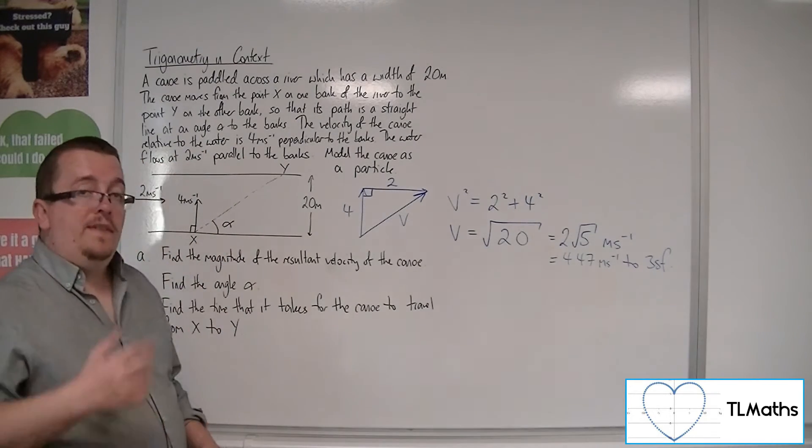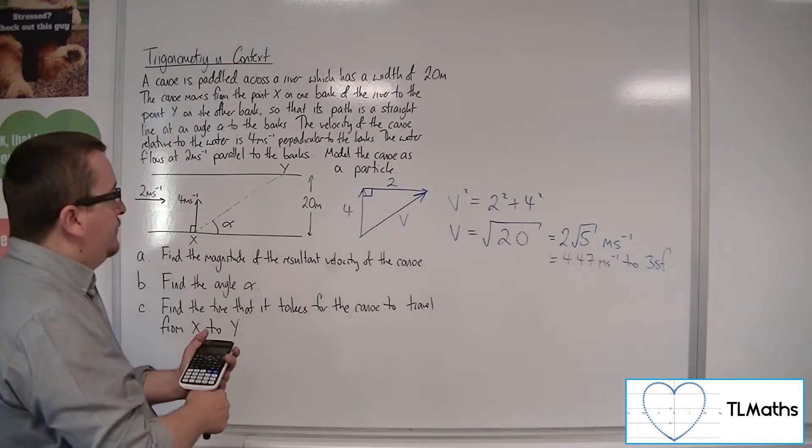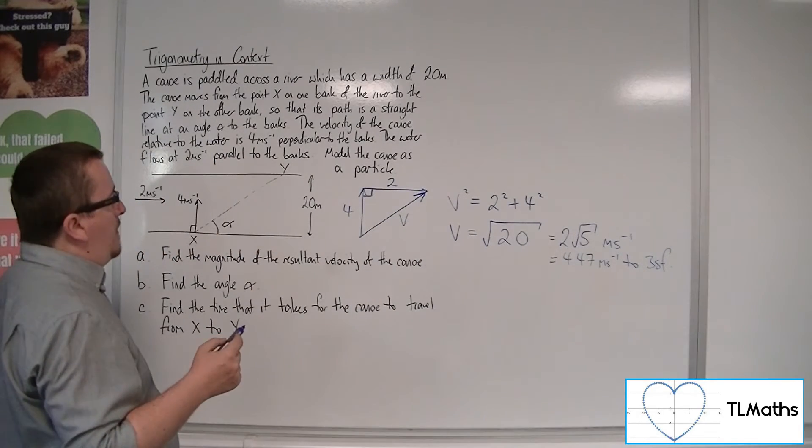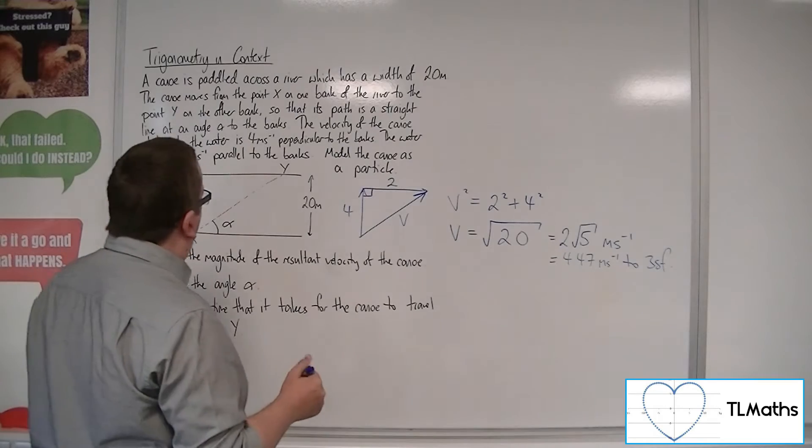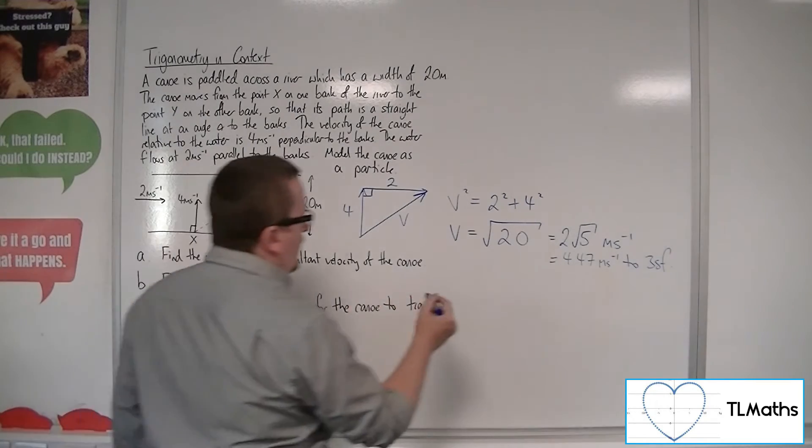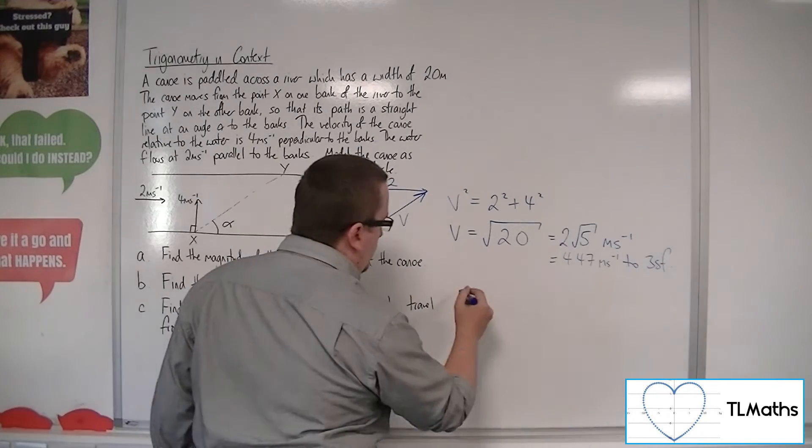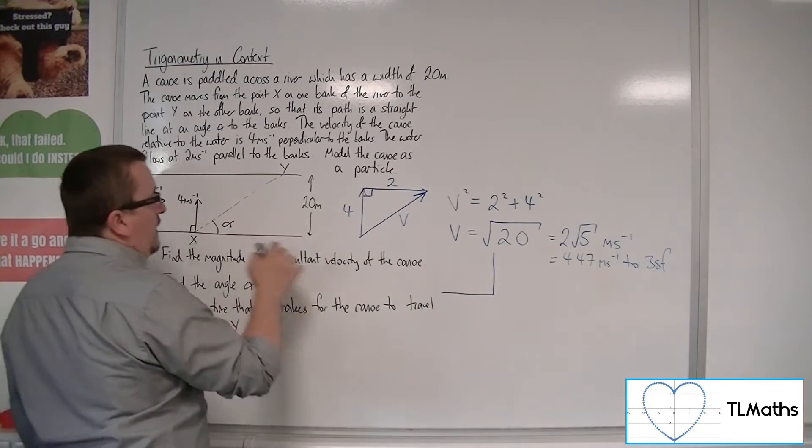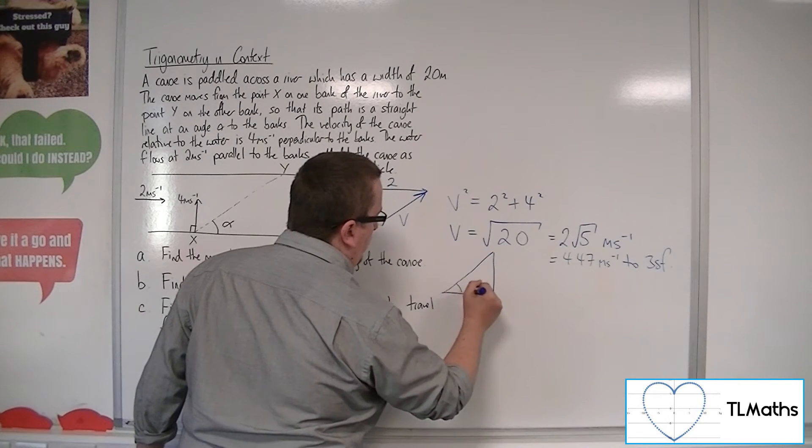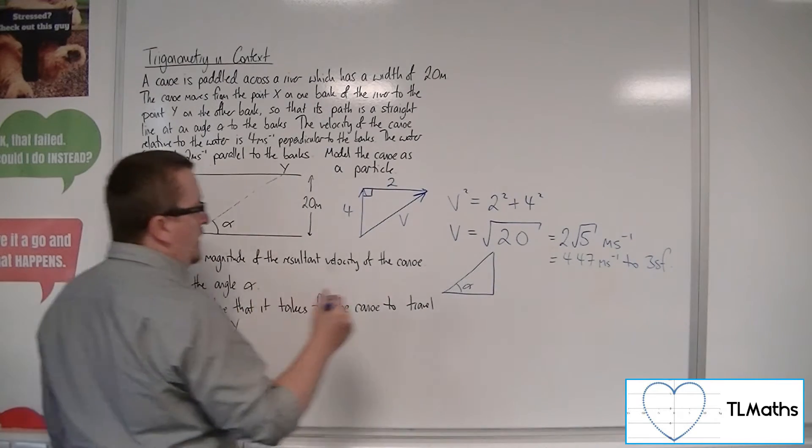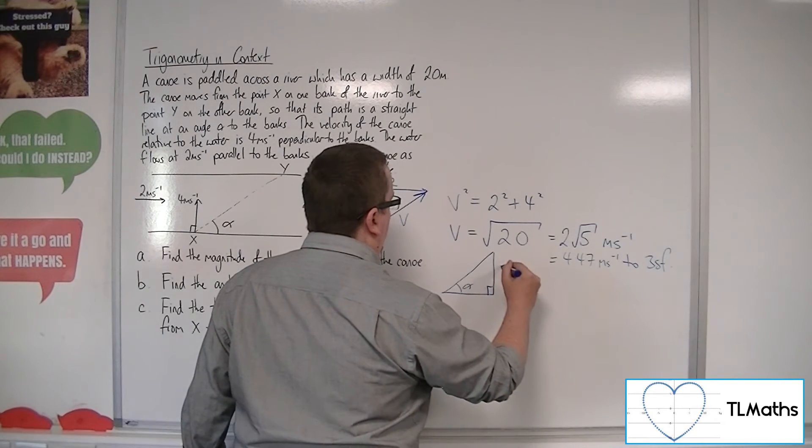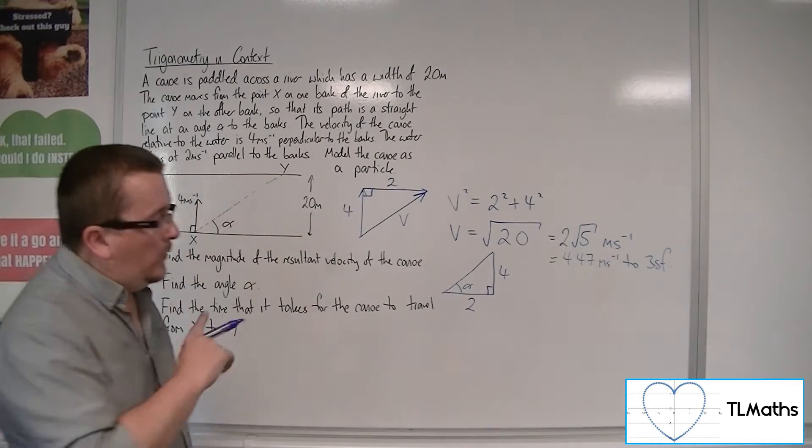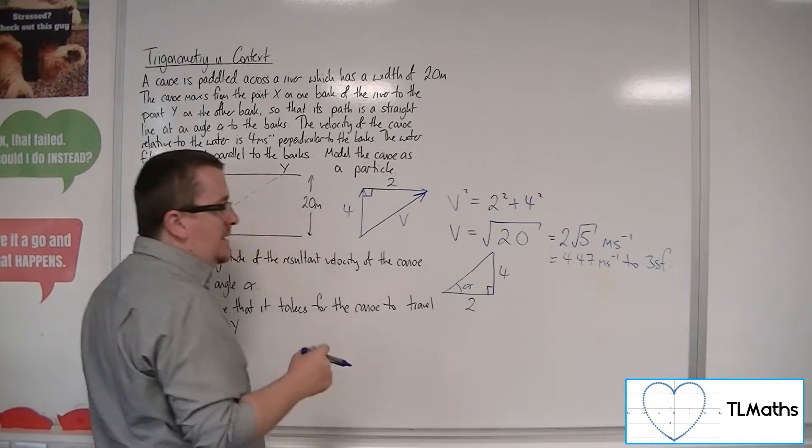We're also asked to find the angle alpha. So you could either use this diagram here, or you could redraw that triangle, if you like, to be where alpha is in that position. So what you have is a right-angled triangle that you could draw in this way instead. There's the alpha. If that's going to be 4 and that's going to be 2, I've just drawn it round the other way, then it's quite easy to see how we can get to alpha.